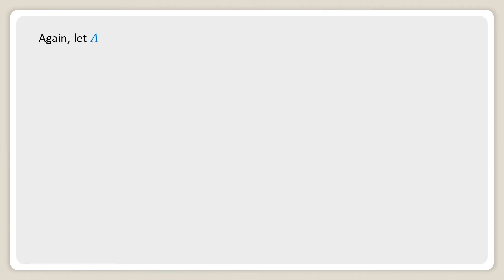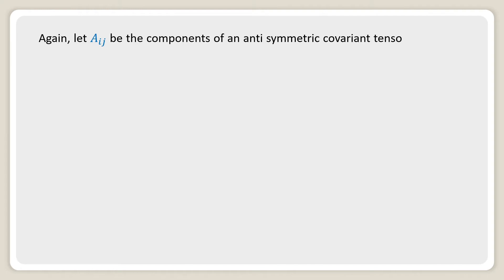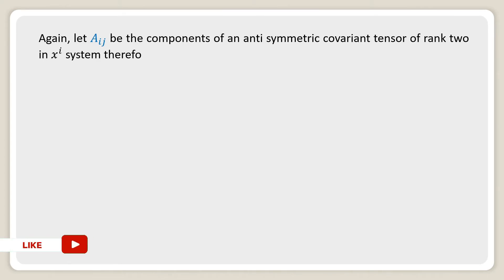Again, let a_{ij} be the components of an anti-symmetric covariant tensor of rank 2 in the X^i system. Therefore, a_{ij} = −a_{ji}.